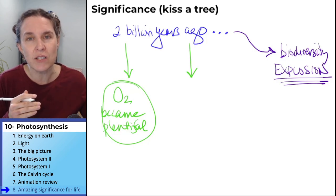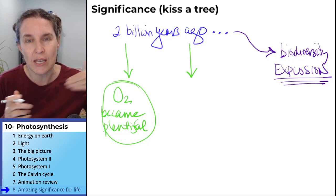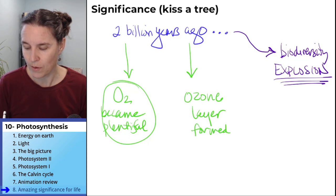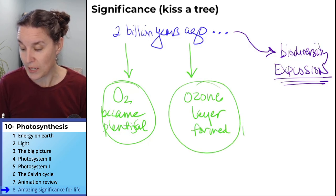So you had this biodiversity explosion because oxygen became more plentiful. The other thing that I think is really interesting is that as oxygen began to be produced in the atmosphere, the ozone layer was formed. And that was protective.